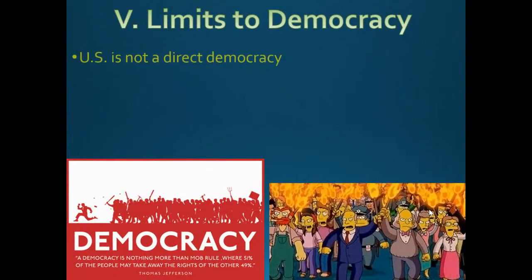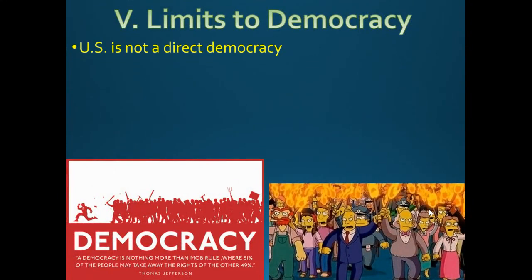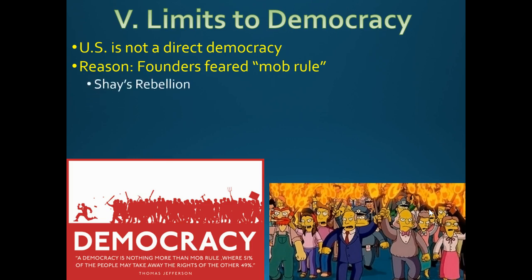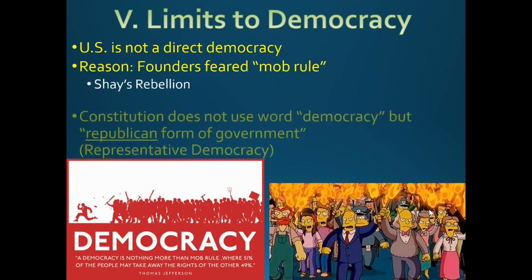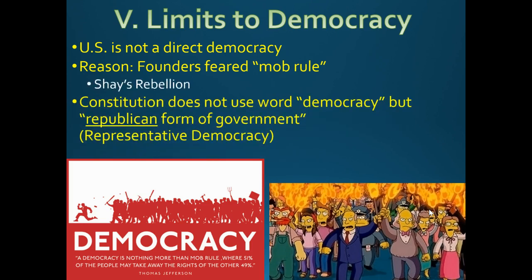There are limits to democracy. We are not a direct democracy — we don't just vote for every single thing. The founders feared mob rule, and you can see why — Shays' Rebellion is an example of that. The Constitution does not use the word 'democracy' but it does refer to us as a republic — a republican form of government.